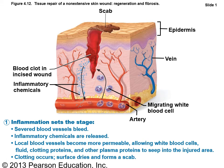The tissue repair process: first, inflammation sets the stage. Severed blood vessels bleed and release inflammatory chemicals, making blood vessels more permeable. White blood cells and fluid leave the vessels; clotting proteins and plasma proteins seep into the injured area to set up repair. Clotting occurs because clotting proteins are released with this fluid — called exudate — the surface dries and a scab forms.